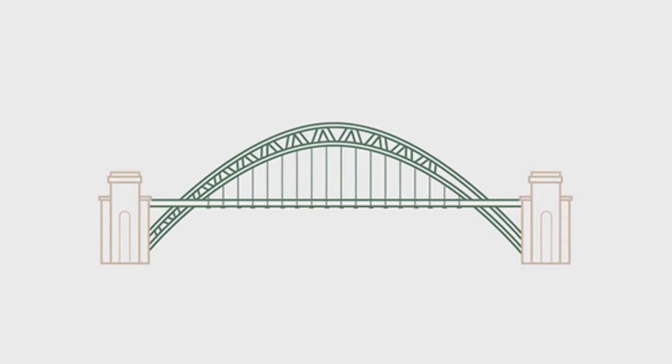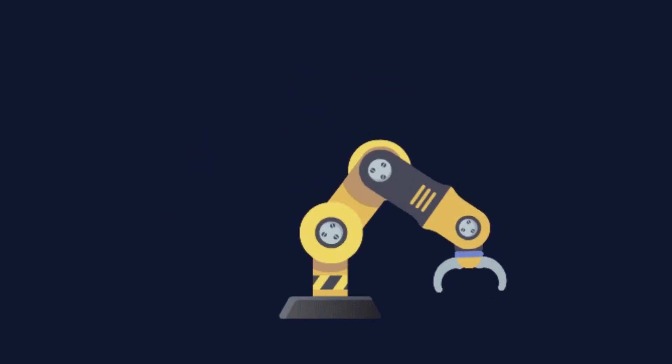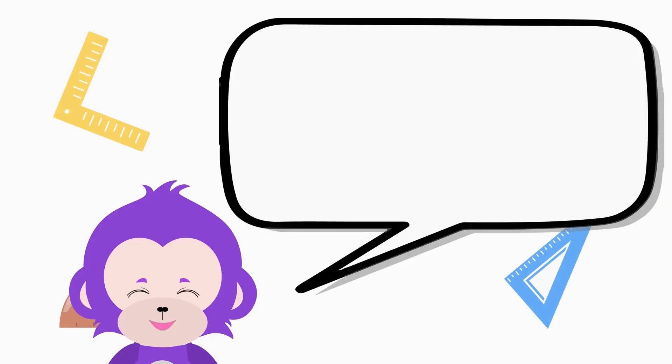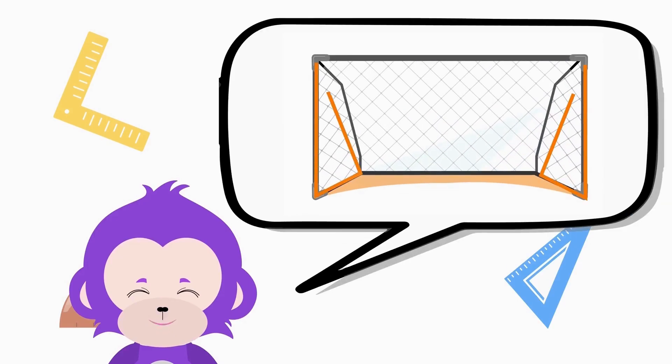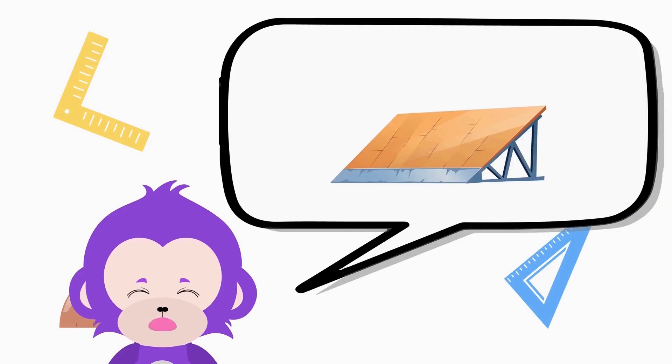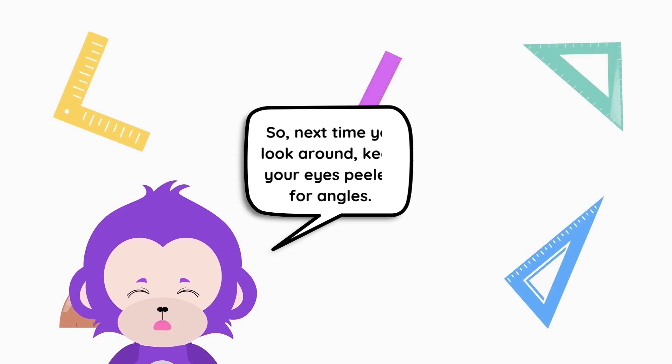Design robots and even play sports. Think about it: a soccer goal post needs two perfect right angles, while a skateboard ramp uses a combination of acute and obtuse angles to give you that awesome ride.